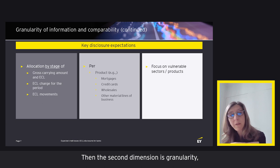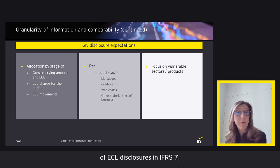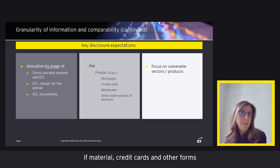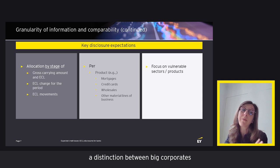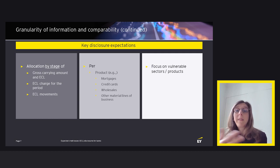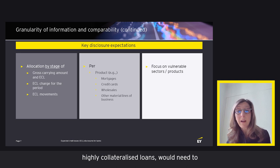The second dimension is granularity. A key differentiator is the product. As suggested in IFRS 7, a useful split would include mortgages — differentiating markets if material — credit cards and other unsecured retail lending, and wholesale. For wholesale, given size is a critical factor, a distinction between big corporates and SMEs makes the data more relevant. Sectors is also a key dimension, especially in current circumstances. Specific products like car financing or highly collateralised loans should be highlighted, as significant 'other' categories are generally unhelpful.